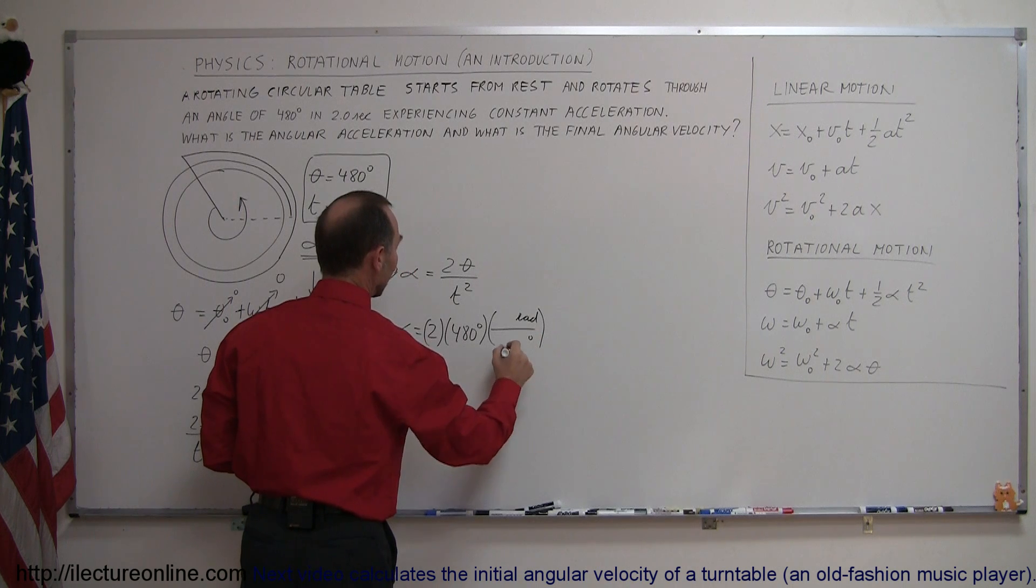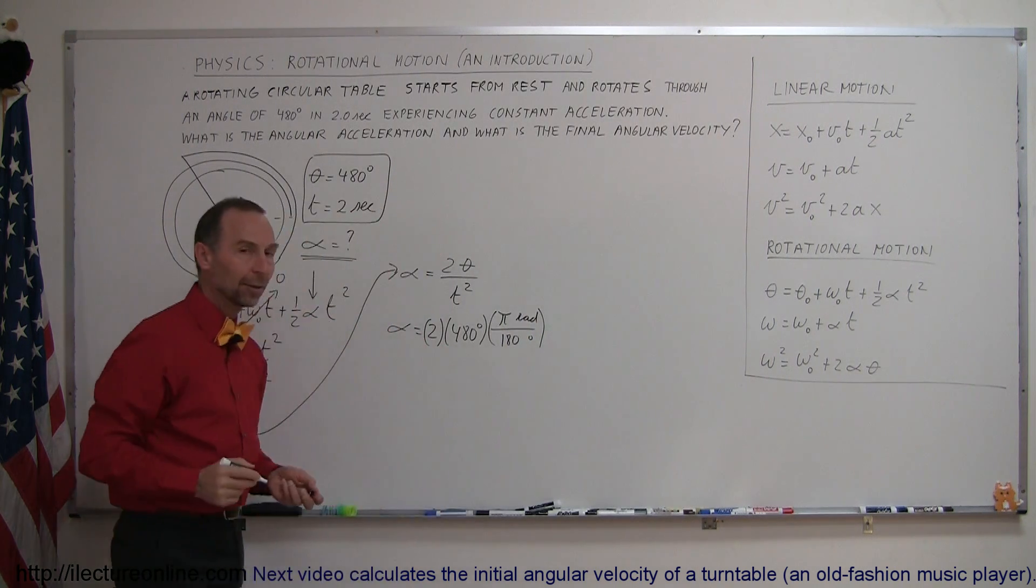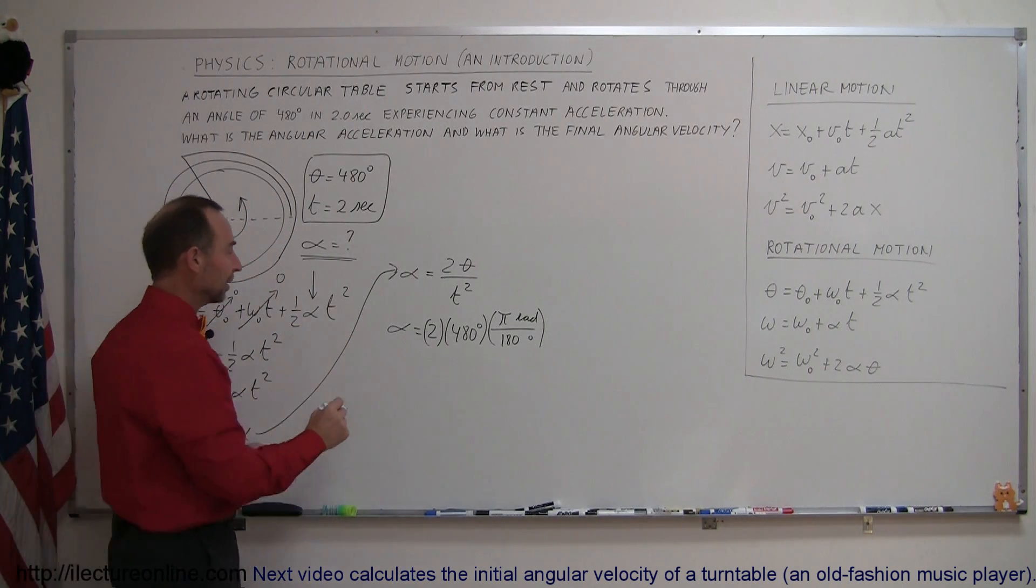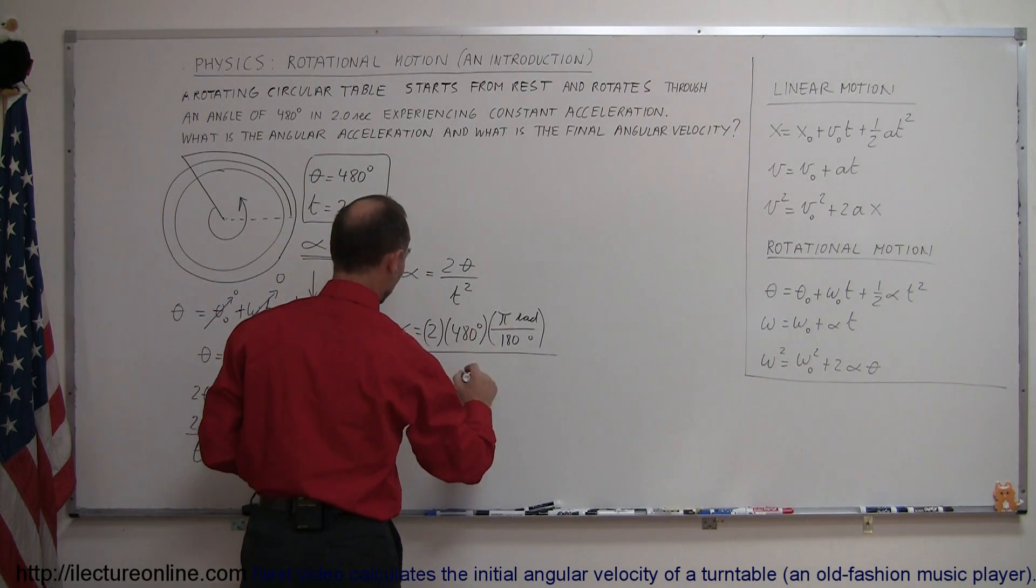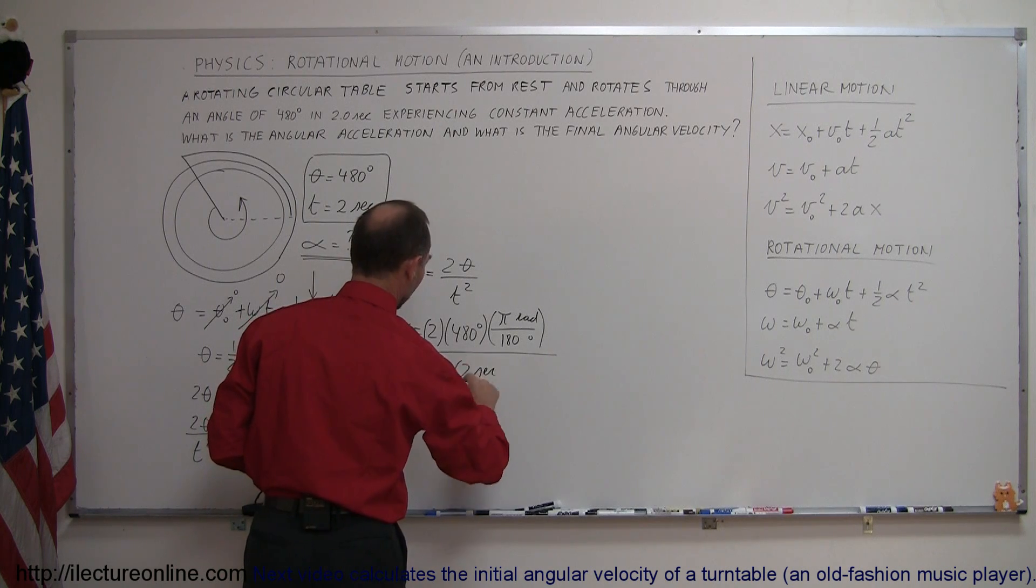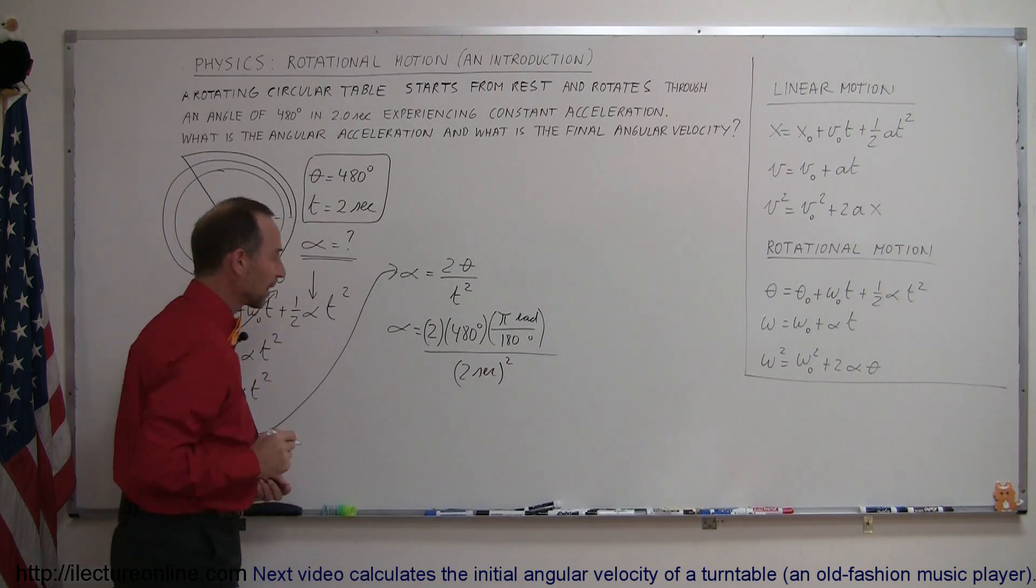So we want radians at the top, degrees at the bottom, and 180 degrees equals pi radians. I like to use pi radians equals 180 degrees. Then we divide that by the time squared, which is 2 seconds squared.